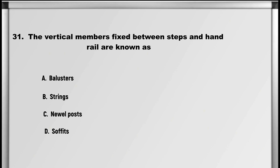Let's move on to question number 31: The vertical members fixed between steps and handrail are known as: A. Balusters, B. Strings, C. Newel posts, D. Soffits. Answer: A. Balusters.